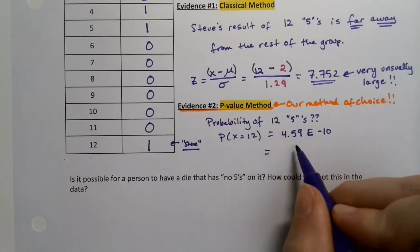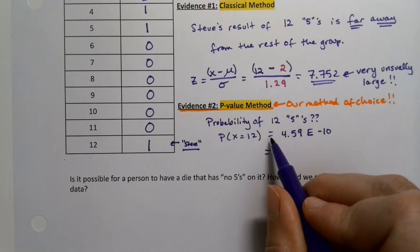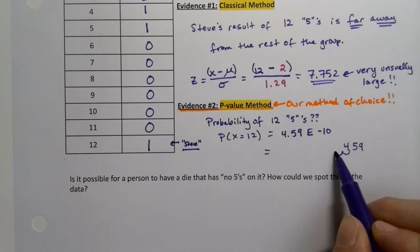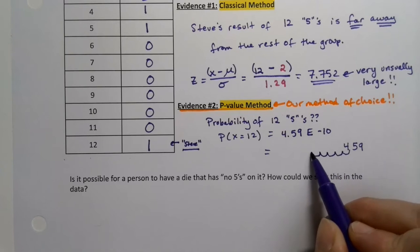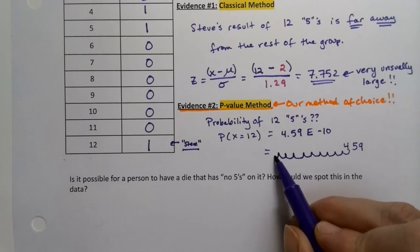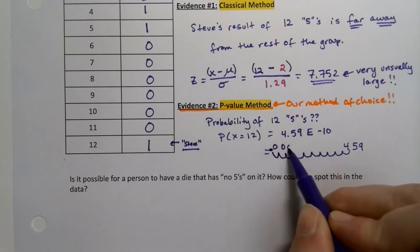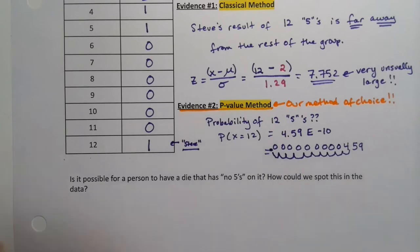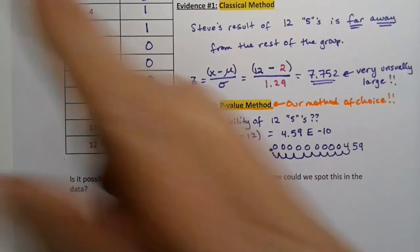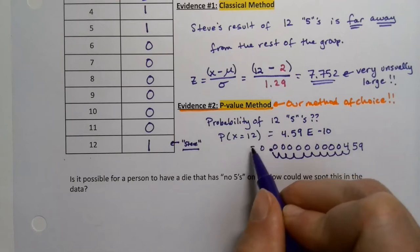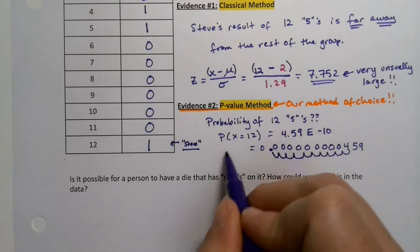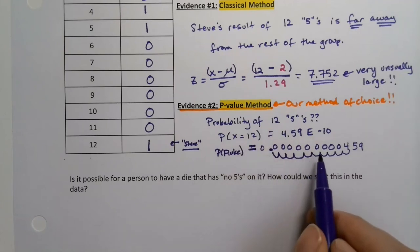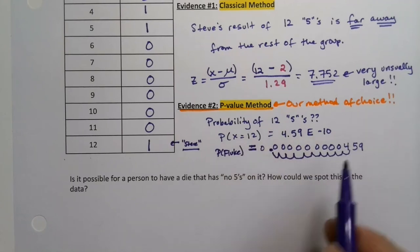So this is that decimal moves 10 spots over to the left. I'd move that decimal 1, 2, 3, 4, 5, 6, 7, 8, 9, 10 spots and that would be zeros for every empty space. That is extremely small. So you'd be saying look the probability of a fluke, because that's what you just found, this is the probability of a fluke.